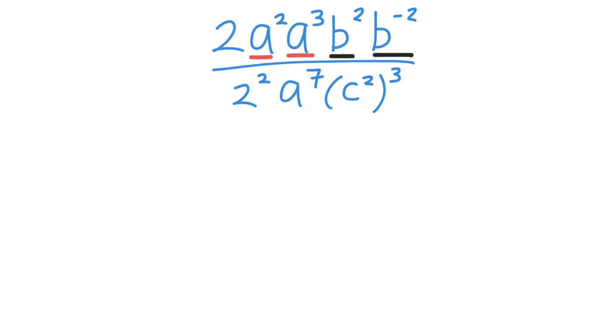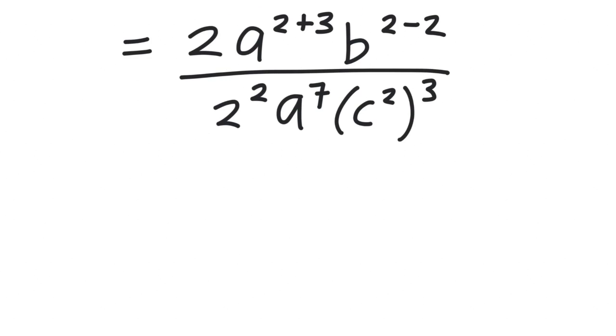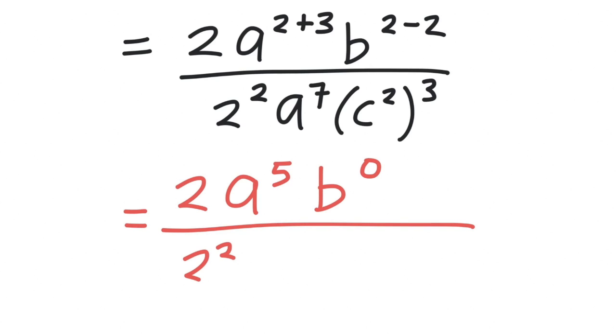When we apply this rule, this equation becomes 2a to the power of 2 plus 3 times b to the power of 2 minus 2, all divided by 2 squared times a to the power of 7 times c squared to the power of 3. This is equal to 2a to the power of 5 times b to the power of 0 over 2 squared times a to the power of 7 times c squared to the power of 3.